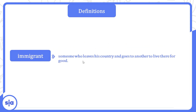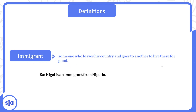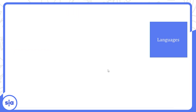'Immigrant' means someone who leaves his country and goes to another to live there for good — المهاجر بيسيب بلده ويروح بلد تانية يعيش فيها على طول. Example: Nigel is an immigrant from Nigeria — الولد ده مهاجر من نيجيريا.